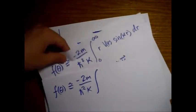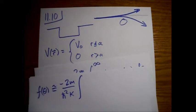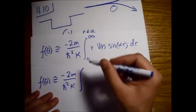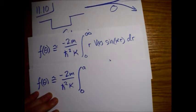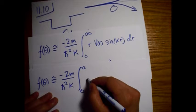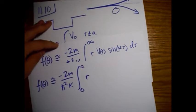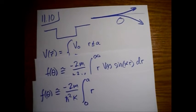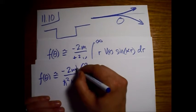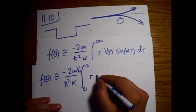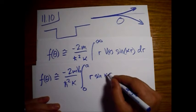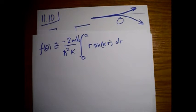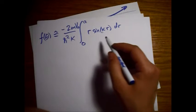Now let's plug in our potential and start the integration. Since the potential is zero outside of a, the integral goes to zero outside of a, so instead of integrating to infinity we just integrate out to a. Inside this range the potential is just the constant V-naught, so we pull that out front and integrate r times sine of kappa r dr.